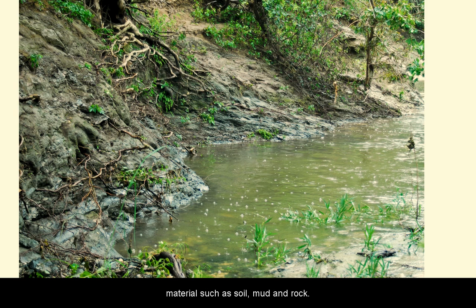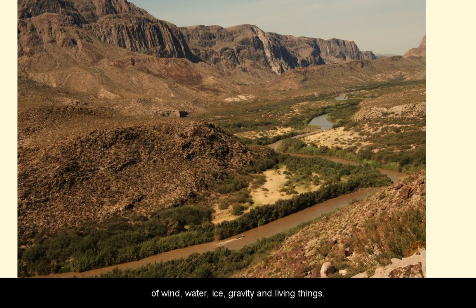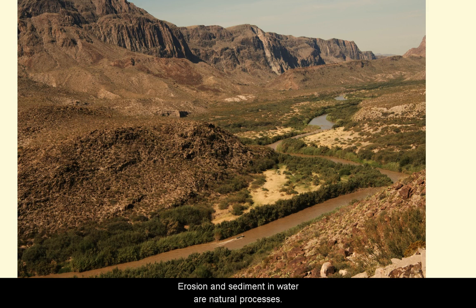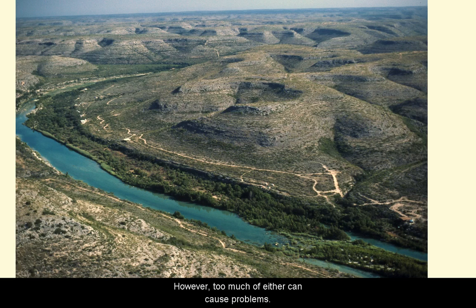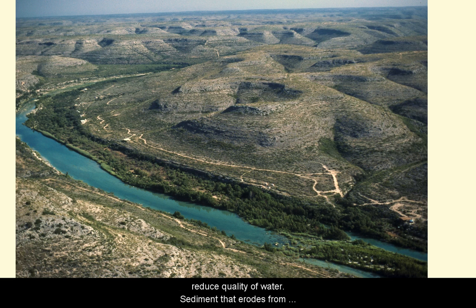Erosion is the wearing away and movement of solid material such as soil, mud, and rock. It's a very powerful natural process caused by the forces of wind, water, ice, gravity, and even living things. Erosion, sediment, and water are natural processes that can make grand landscapes. However, too much of either can cause problems.